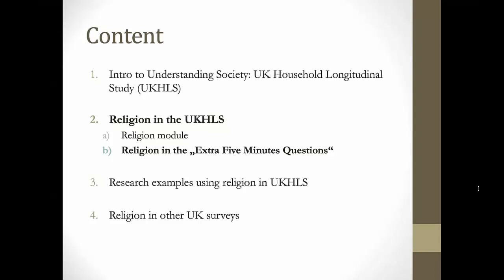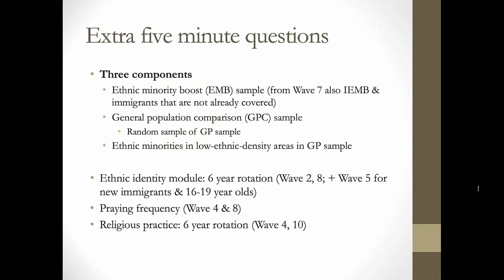The extra five-minute questions include some additional, more specific items on religion. These questions consist of three components: people from the ethnic minority boost sample or the additional boost started at wave six; a general population comparison sample for making comparisons; and ethnic minorities in low ethnic density areas in the GP sample to make the data representative. Within these, there are rotating modules, and the modules that include religion questions are: the ethnic identity module on a six-year rotation, asked at waves two and eight; praying frequency at waves four and eight; and religious practice, also on a six-year rotation starting at wave four.